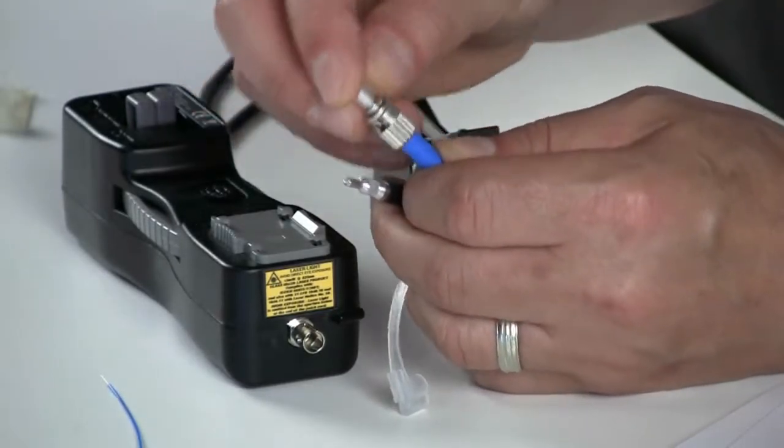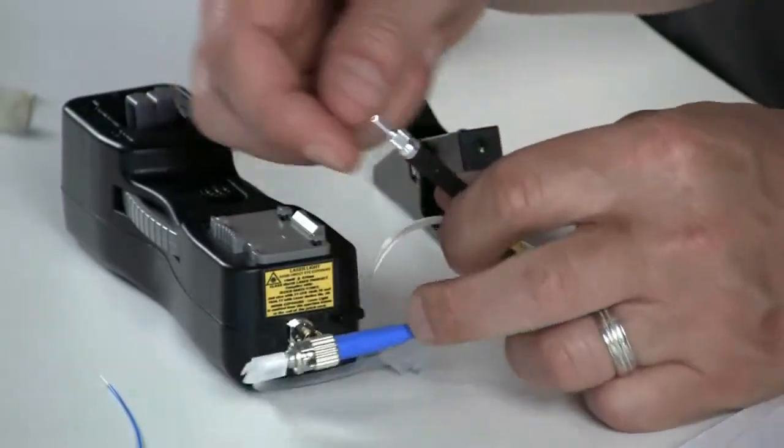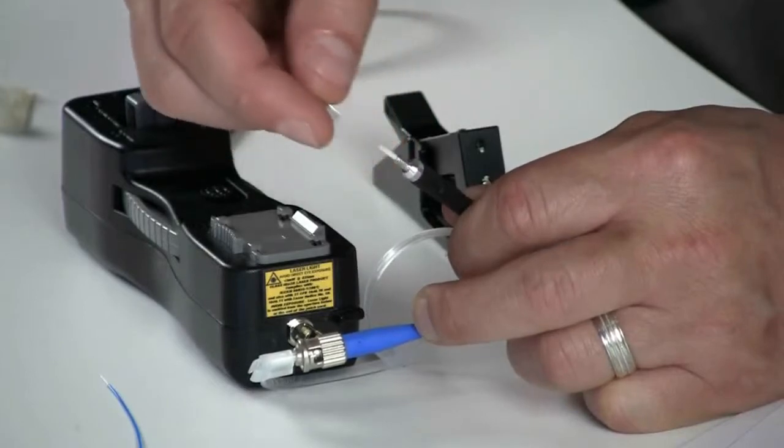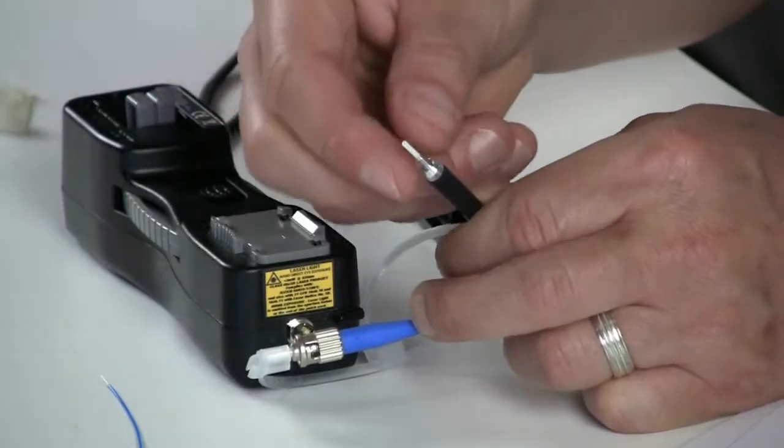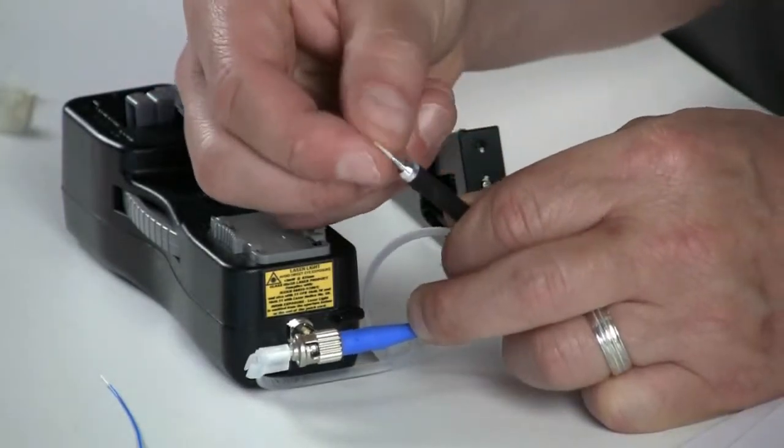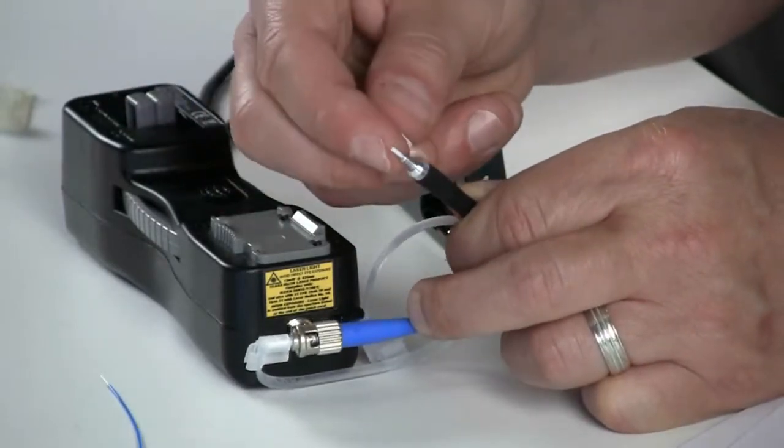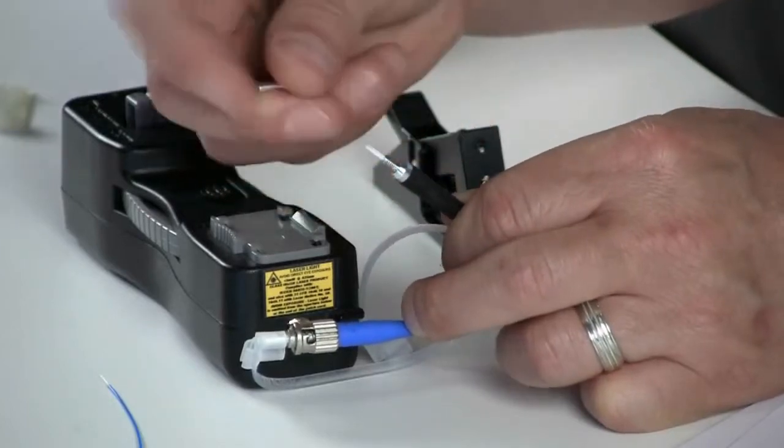Another thing to check is the actual split sleeve on the ferrule portion of the patch cord. You want to unscrew the tip, ensure that the ceramic split sleeve has no cracks and clean with the kim wipe the ferrule internal.